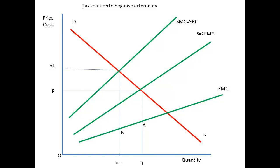Consider the map shown. The demand curve is represented by DD and the supply curve, as the sum of all the private marginal costs, is shown as S. At this point a quantity Q is supplied at a price of P. However, there is an extra marginal cost shown by the green line EMC. To compensate for the extra marginal cost, the good is subject to taxation, and the new supply curve is represented by a social marginal cost curve, SMC. This curve is made up from the original marginal cost and the additional taxation. The effect is to reduce the quantity supplied to Q1 and to raise the price to P1.